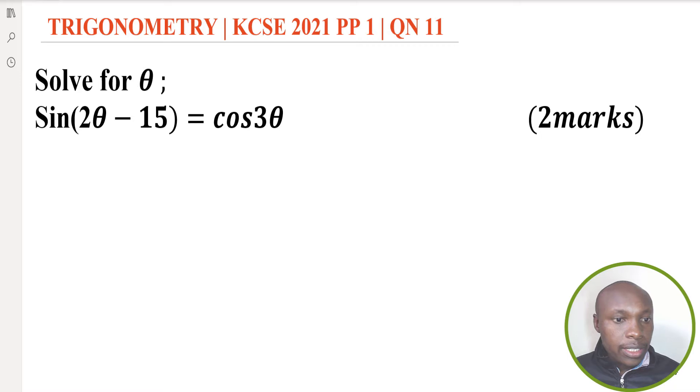Now solve for theta in sine of 2θ minus 15 equals cosine of 3θ. Let's go straight to the solution. To solve this question, this is a property that we need to understand.